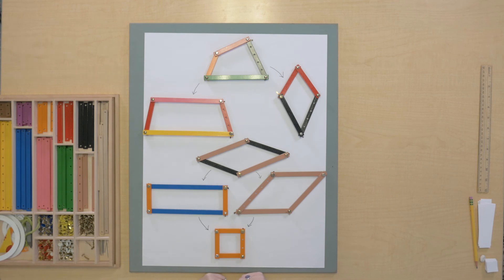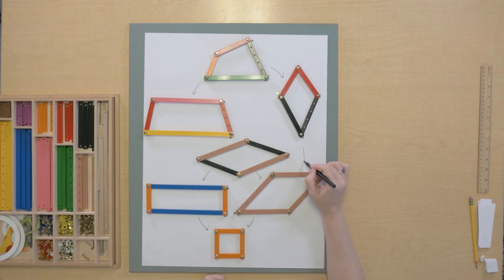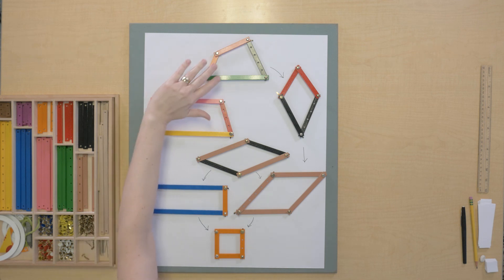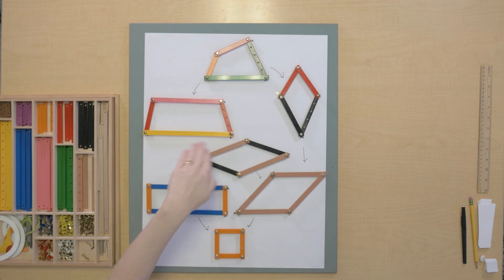This is the family tree of quadrilaterals. We start up here with the least defined quadrilateral and the different definitions and relationships all the way down to our most defined quadrilateral, the square. I wonder if we took these quadrilaterals off if you could put them back or think through all these relationships again.